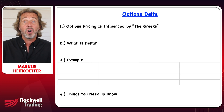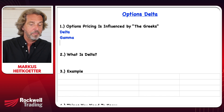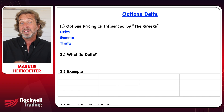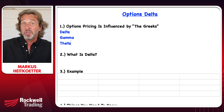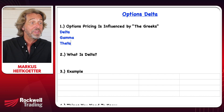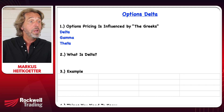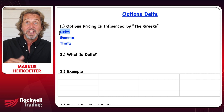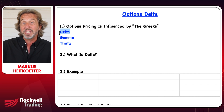Let's talk about options delta. Option prices are influenced by what they call the Greeks. The Greeks include delta, gamma, and theta — this is just three of them, there are more. When you're trading options, it is important that you know about the Greeks and what they do. Today we want to focus on delta. I want to show you exactly what delta is, and then we'll go through a specific example and cover a few things you need to know about it.